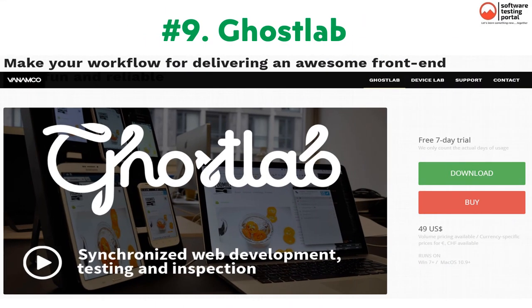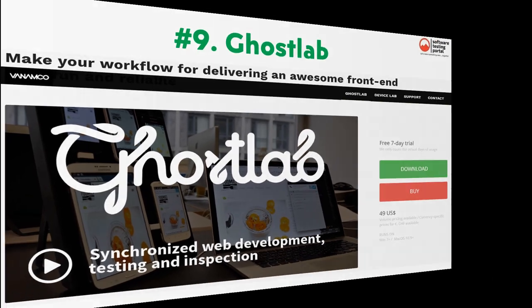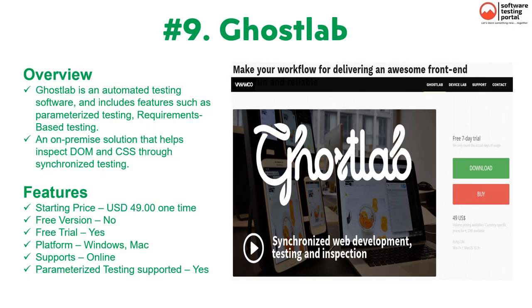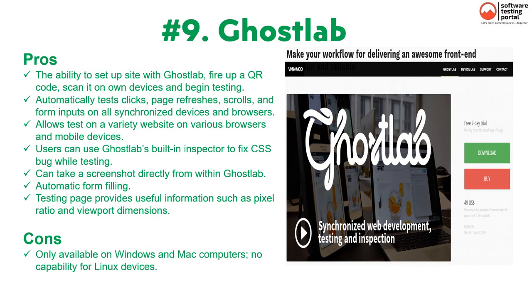The ninth tool is Ghostlab. Ghostlab is automated testing software with features such as parameterized testing, requirements-based testing, and test script reviews. It is an on-premise solution that helps inspect DOM and CSS through synchronized testing. Features include a free trial, one-time price of $49, available on Windows and Mac, online support, and parallel execution. Pros: easy to set up via QR code scan on your own devices; automatically tests clicks, page refreshes, scrolls, and form inputs on all synchronized devices; and keeps all connected devices and browsers in sync.